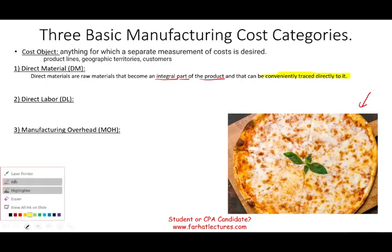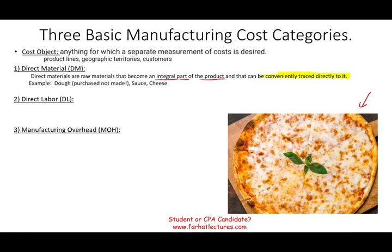What could be the direct material for pizza? I can see the sauce, I can see the cheese, and I can see the dough — so I would say those three are examples. By the way, we purchased the dough; we did not make the dough. The sauce and the cheese as well. Those are the three main ingredients that go into a pizza.